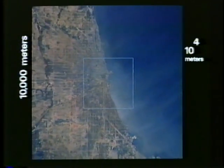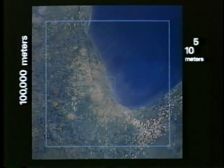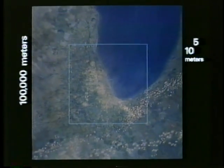10 to the 4th meters, 10 kilometers. The distance a supersonic airplane can travel in 10 seconds. We see first the rounded end of Lake Michigan, then the whole great lake. 10 to the 5th meters. The distance an orbiting satellite covers in 10 seconds. Long parades of clouds. The day's weather in the Middle West.